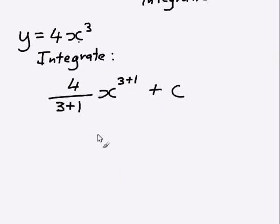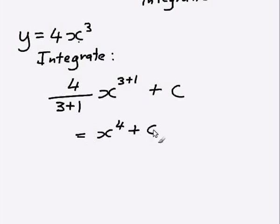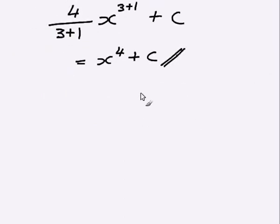So 4 divided by 4 is just 1, so you don't need to write it. x to the power 3 plus 1 is x to the power 4, plus the constant of integration c. And that's the integral answer.